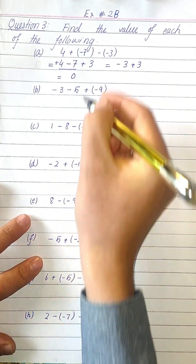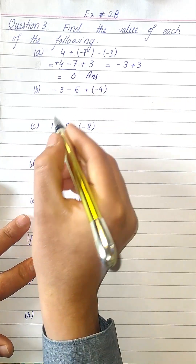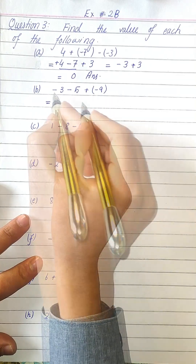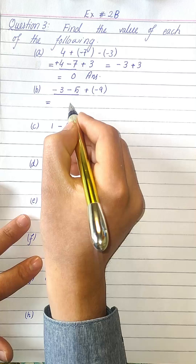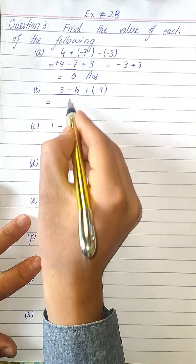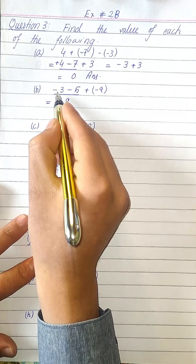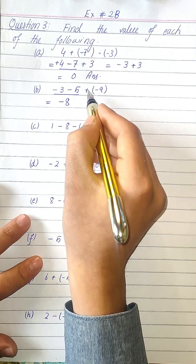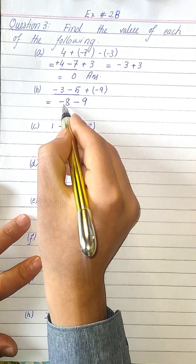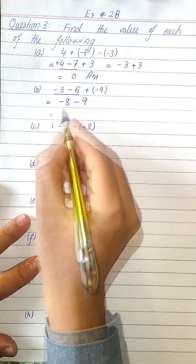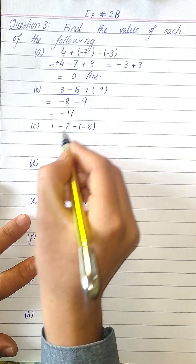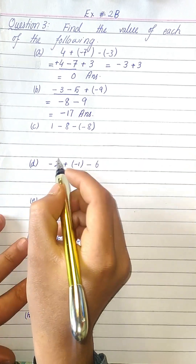In part b, we have minus three, minus five, plus times minus nine. First, since minus three and minus five have the same sign, we add: three plus five is eight, keeping the same sign — so minus eight. Then plus times minus is minus nine. Both have the same sign, so eight plus nine is 17, and the sign remains minus, giving us minus 17.